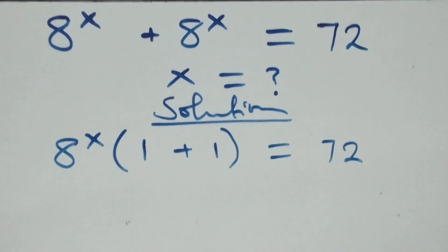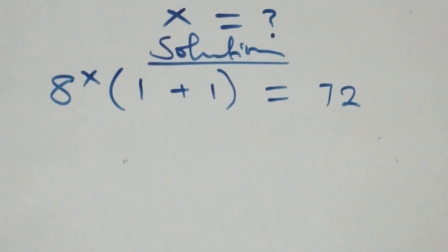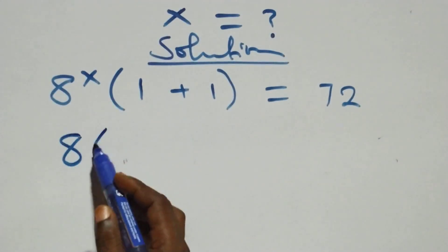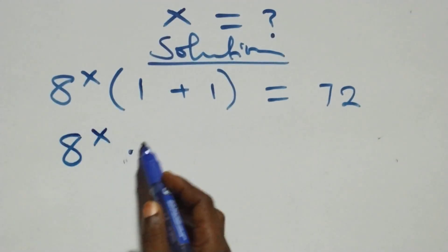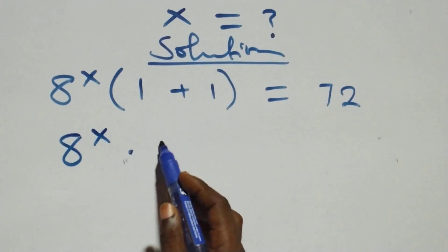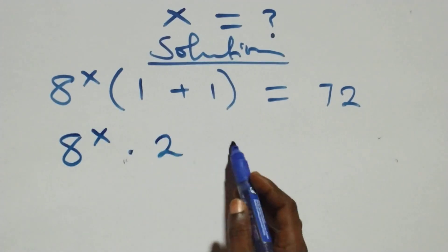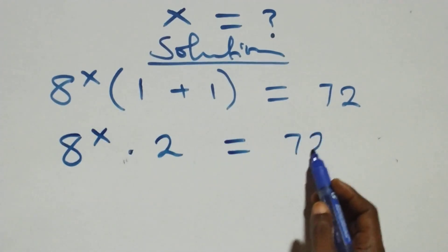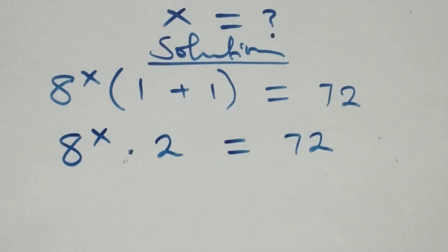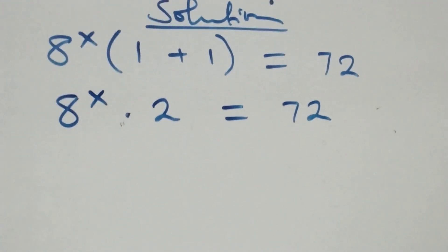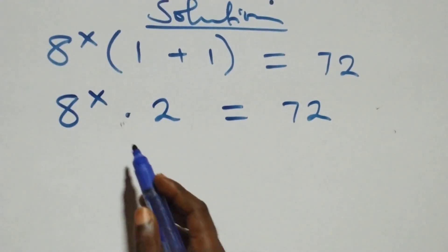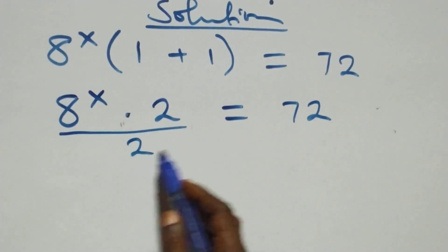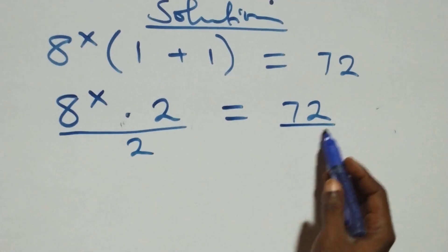Our next step: this becomes 8 raised to power x times one plus one, that's two, equals 72. Our next step, we divide both sides by two.